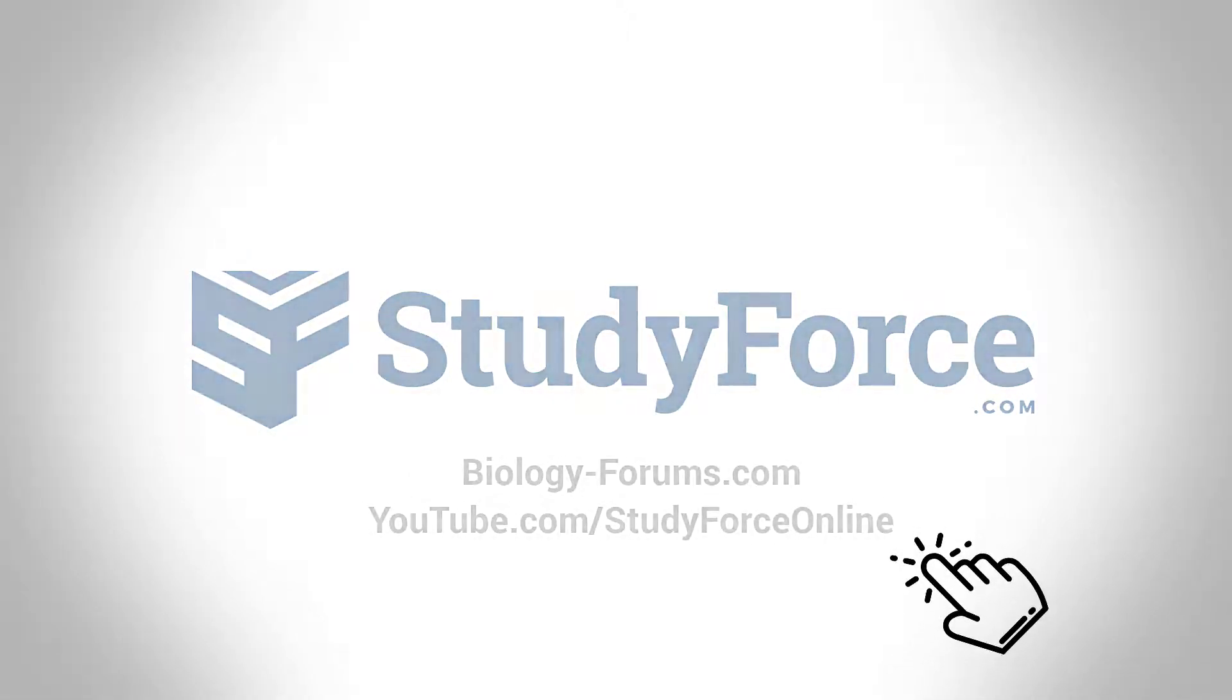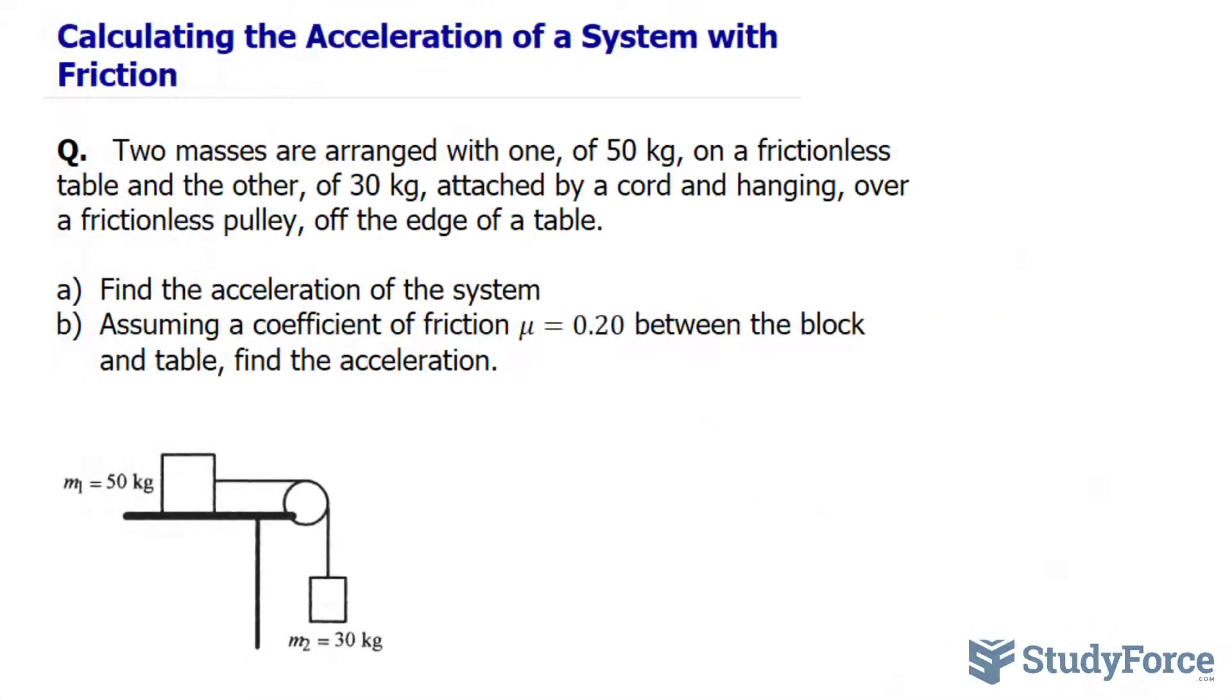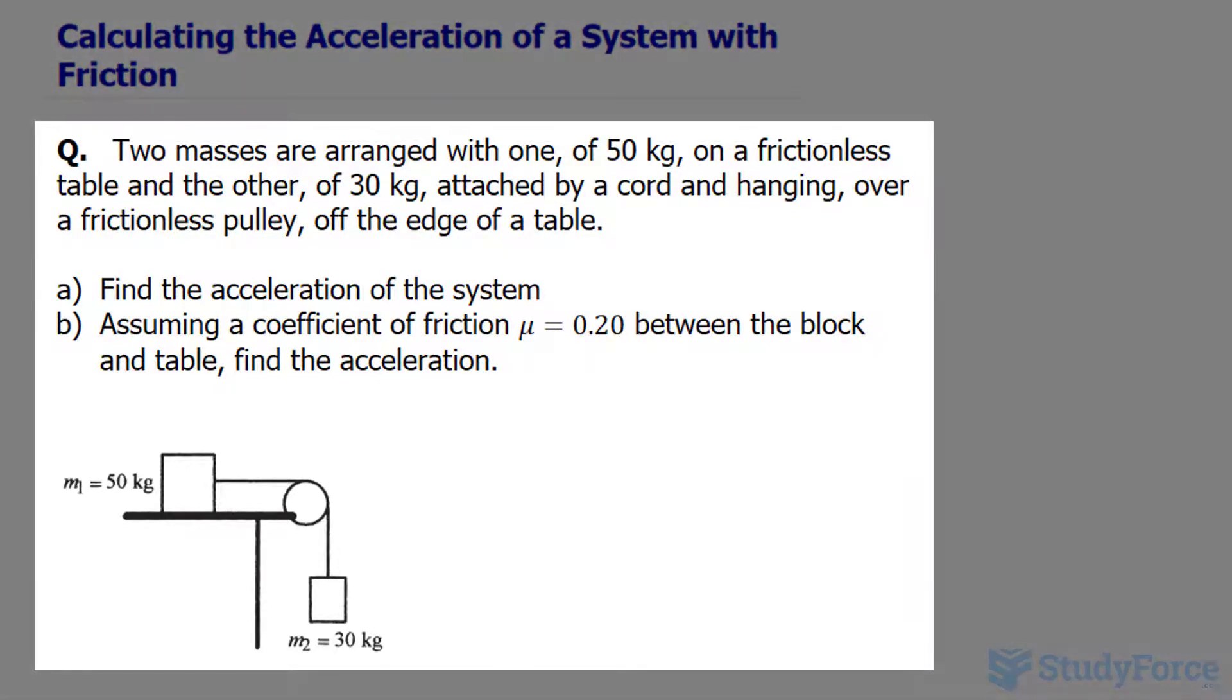In this lesson, I'll show you the complete set of steps you need to calculate the acceleration of a system with friction. The question reads, two masses are arranged with one of 50 kg on a frictionless table and the other of 30 kg attached by a cord and hanging over a frictionless pulley.